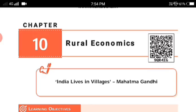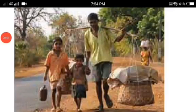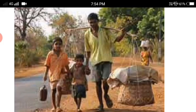Rural economy refers to villages, and rural community refers to the people living in the villages. Rural areas have problems like backwardness of agriculture.